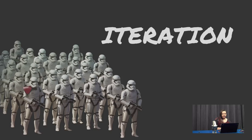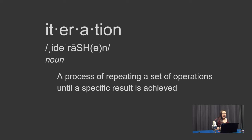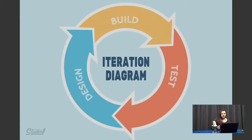Another principle of design is iteration. Iteration is a process of repeating a set of operations until a specific result is achieved. This is usually an actual design process in which you go through your design and weed out things that you don't necessarily want. It's an expected iteration that occurs when exploring, testing, or refining design concepts, and each cycle narrows down the design into something that you actually want.